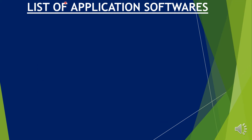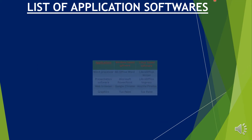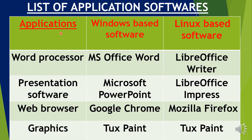List of Application Software: Word Processor — Windows-based: MS Office Word; Linux-based: LibreOffice Writer. Presentation Software — Windows-based: Microsoft PowerPoint; Linux-based: LibreOffice Impress. Web Browser — Windows-based: Google Chrome; Linux-based: Mozilla Firefox. Graphics — Windows-based: Tuxpaint; Linux-based: Tuxpaint.